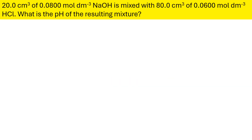So our question is up in the yellow strip at the top. 20 centimeters cubed of 0.0800 moles per decimeter cubed NaOH is mixed with 80 centimeters cubed of 0.0600 moles per decimeter cubed HCl, and they want the pH of the resulting mixture.